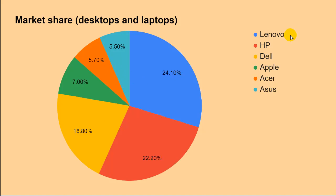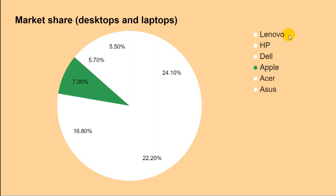Lenovo makes a lot of laptops and desktops — they're a Chinese company based in Beijing. Hewlett-Packard, HP, makes desktops and laptops; they're based in Palo Alto, California. Dell makes desktops and laptops; they're based in Texas. Apple only makes Apple products — they don't make PCs. Acer and Asus are both companies based in Taiwan. So you can see that almost all desktops and laptops are PCs running Windows.